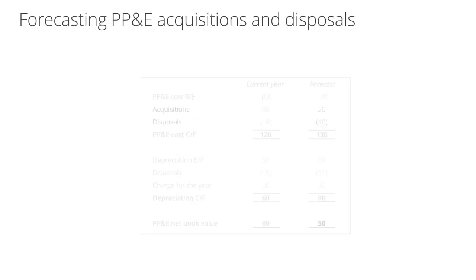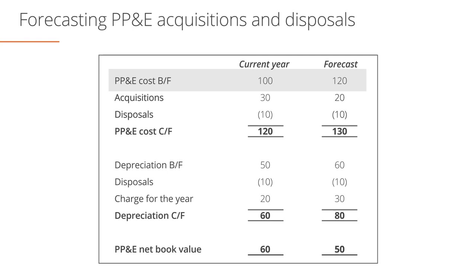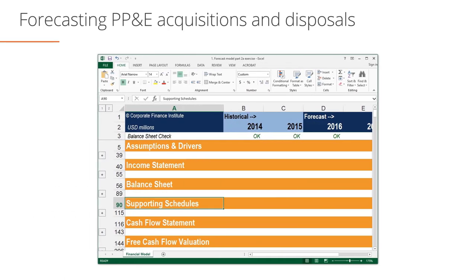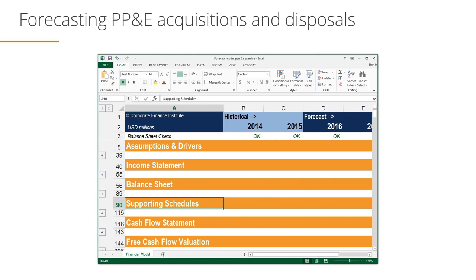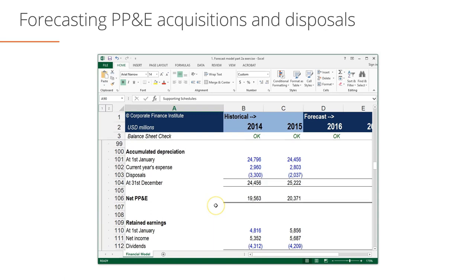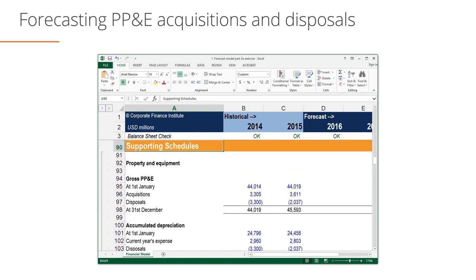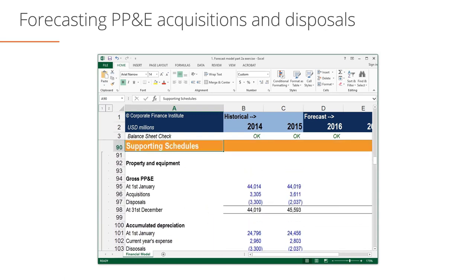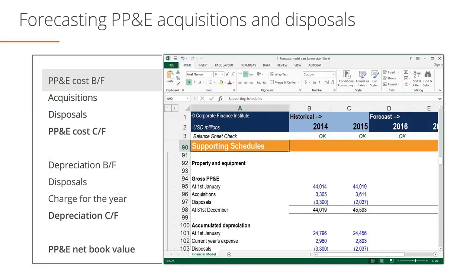In more complex forecasts, we may need to break down property, plant, and equipment. In order to do this easily within a model, the best approach is to put the property, plant, and equipment breakdown in a separate note or schedule. If you recall from the first module, we put all of our supporting schedules in a separate section to keep our building blocks for inputs, processing, and outputs separate. Breaking down the calculation will allow us to identify forecast acquisitions and disposals, which are necessary to complete a cash flow forecast.